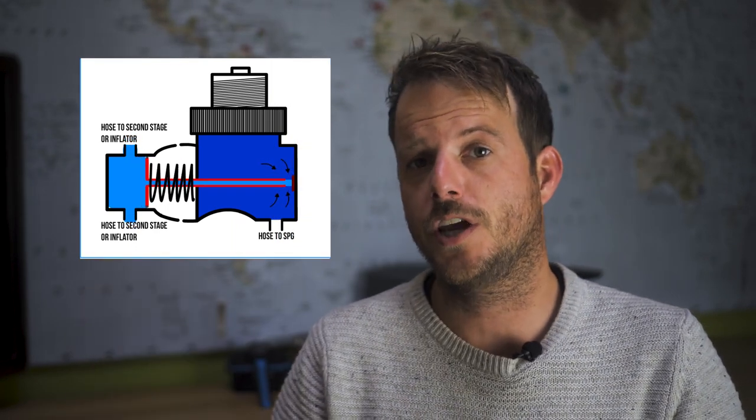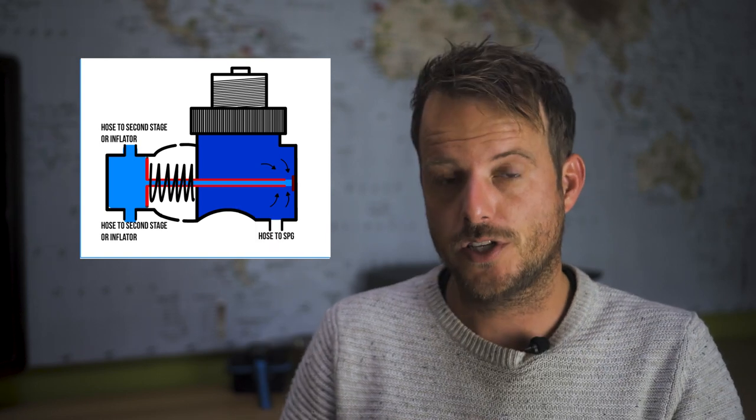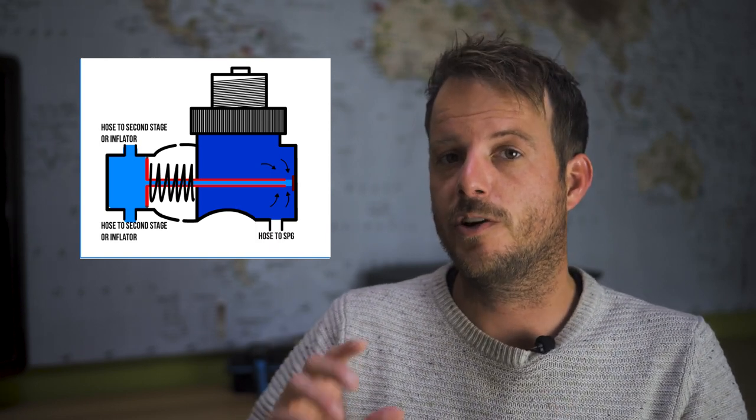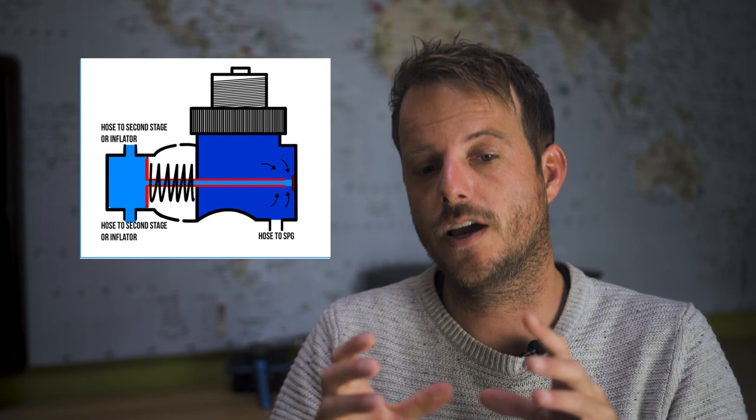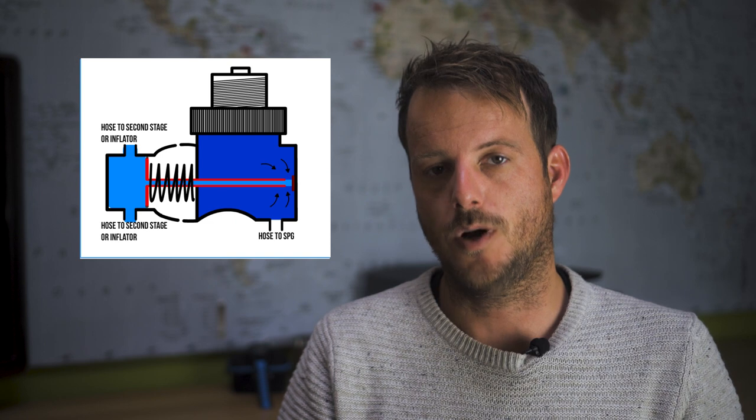If we look at the image the first chamber you will see on this side is the high pressure chamber. This is a chamber which is directly connected to the tank so all the air from the tank goes straight into this chamber. This is also where your SPG is mounted.